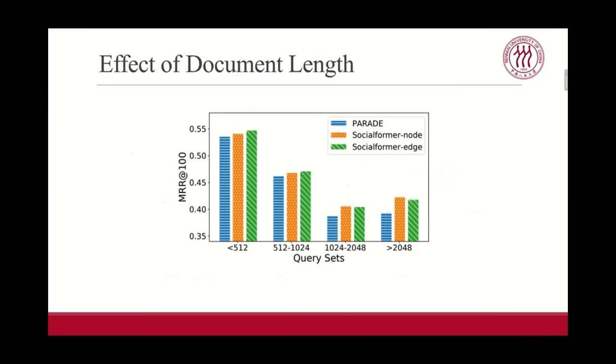And then, to observe what kind of query set the model is suitable for, we divided the whole query set on MS Marco to four subsets based on document length. We find that our social aware models perform better than the baseline model on all query sets. And the gap between social former and parade is widening as the document length grows. This indicates that building direct remote edges based on social networks enable the model to understand long documents better.